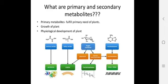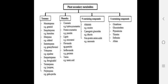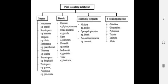Primary metabolites fulfill the primary needs of the plant. They are helpful for plant growth and physiological development — proteins, amino acids, and carbohydrates are primary metabolites. Secondary metabolites are designed for advanced functioning.